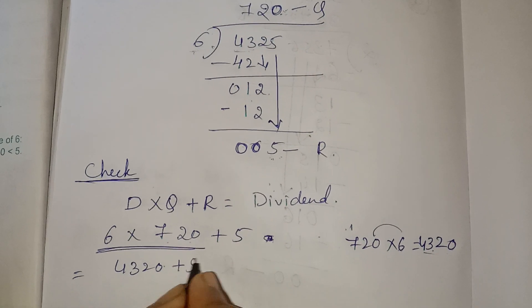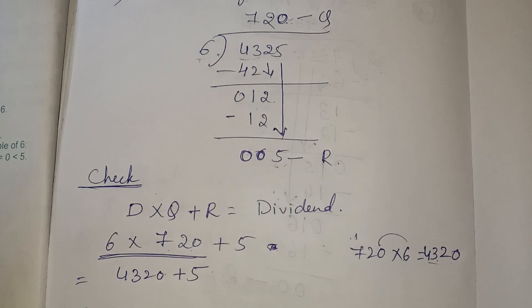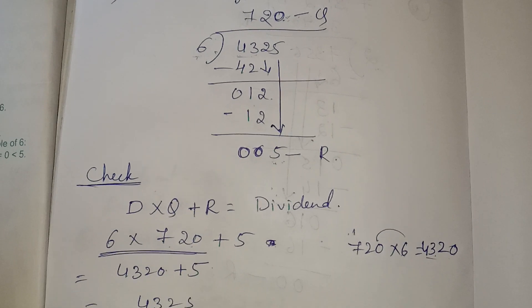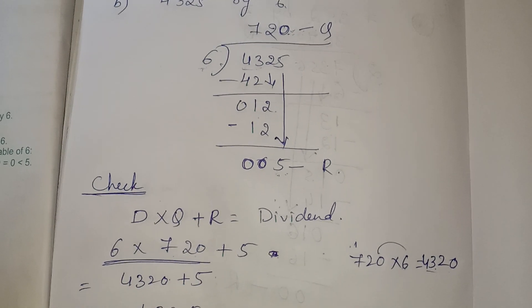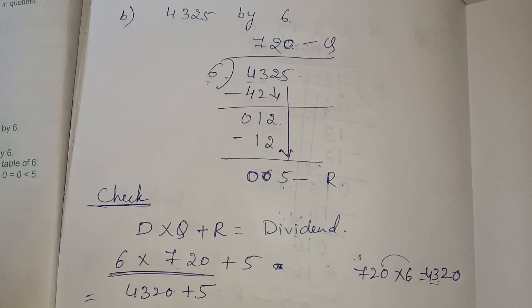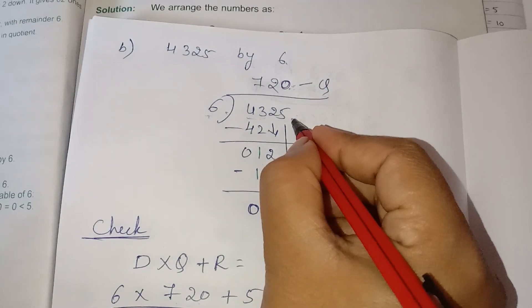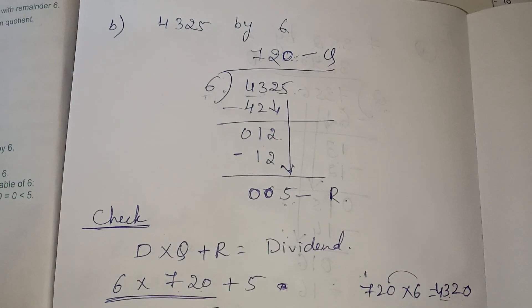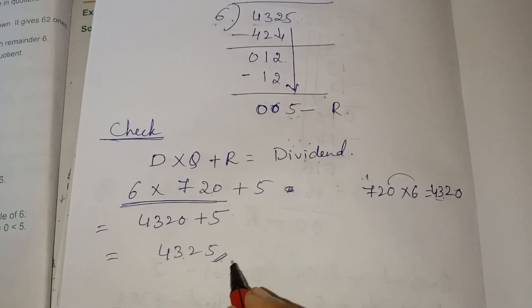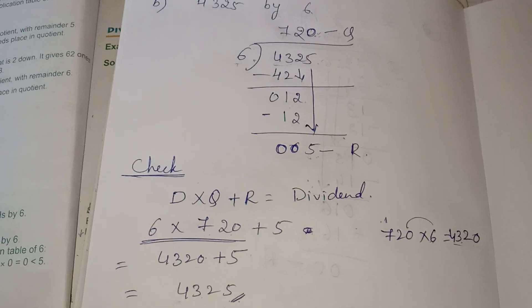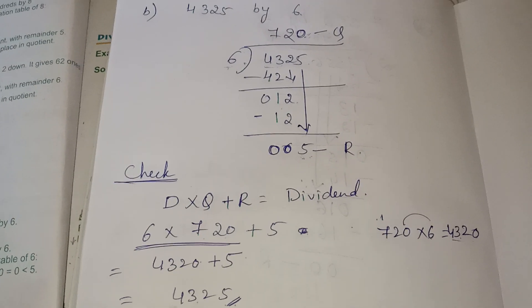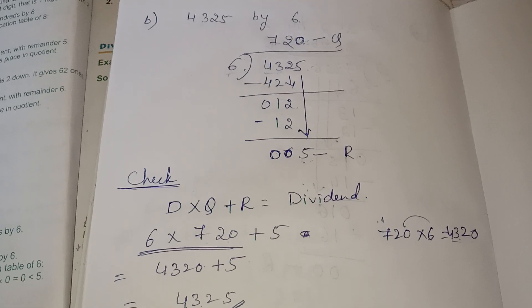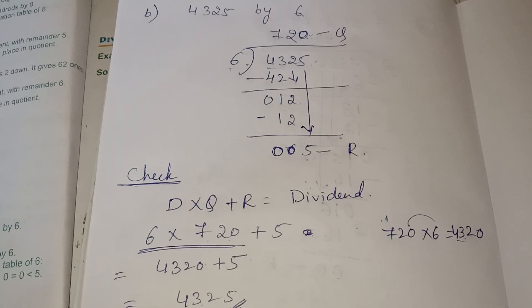Then add 5 to this: 4325. This is the exact dividend — 4325 is the dividend. Whatever you have done is correct, verified by checking the answer.